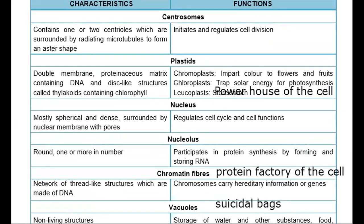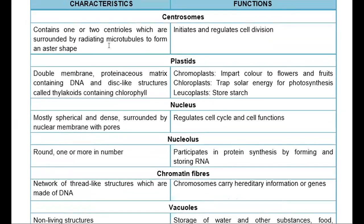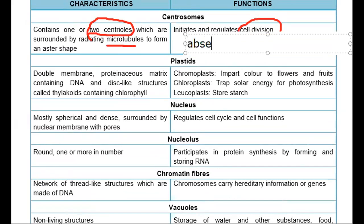Centrosomes have two centrioles and are made of microtubules. They are involved in cell division and are found only in animal cells. Centrosomes are absent in plant cells.